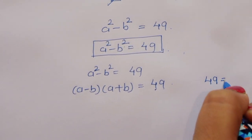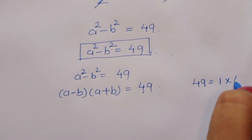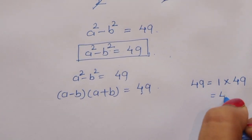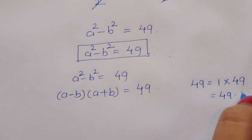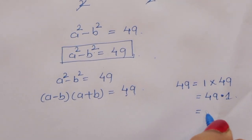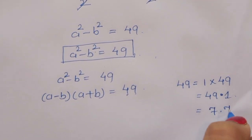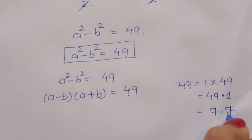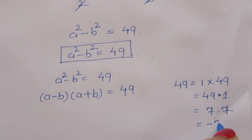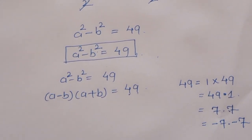49 can be written as: 1 times 49, or 49 times 1, or 7 times 7, or minus 7 times minus 7 — all equal to 49.